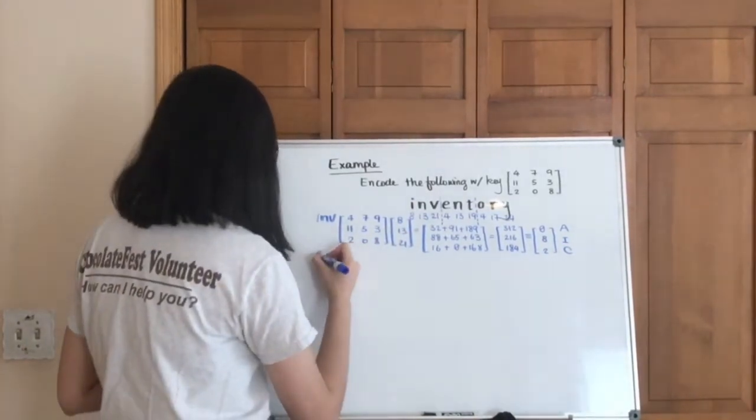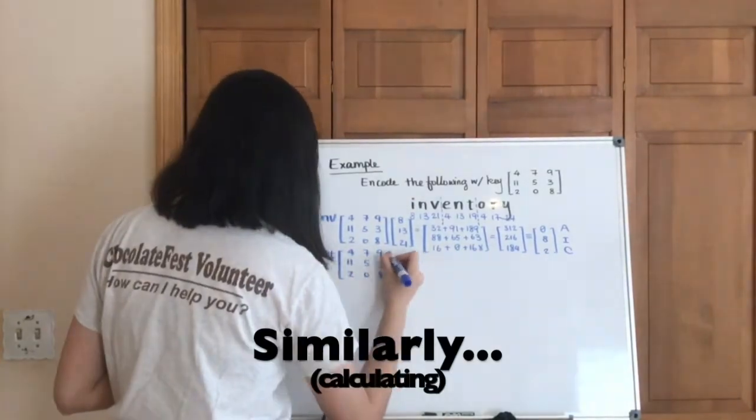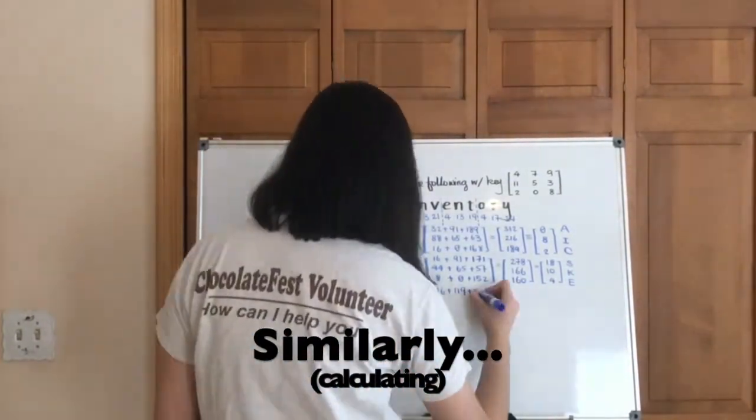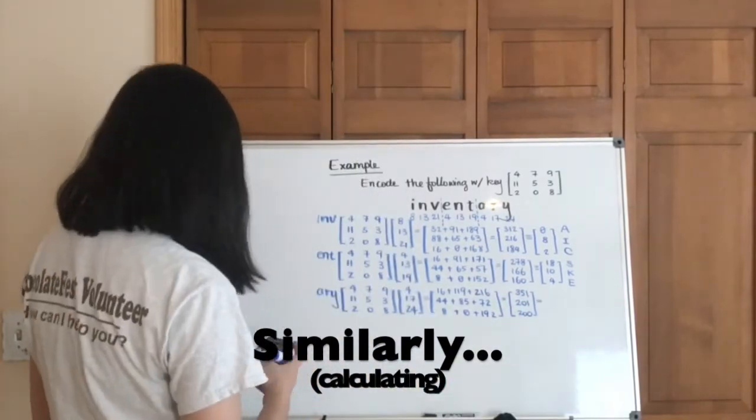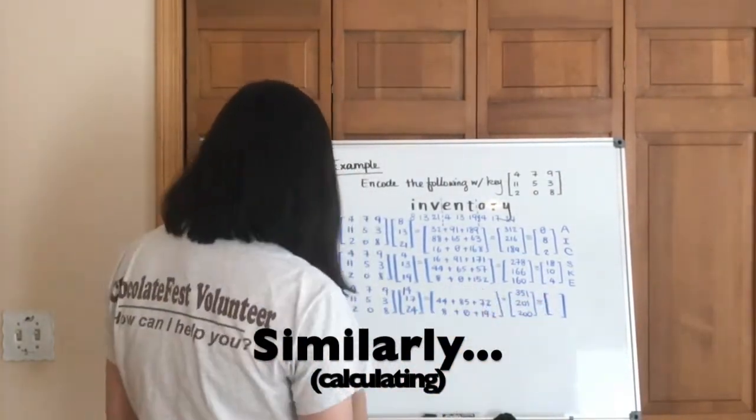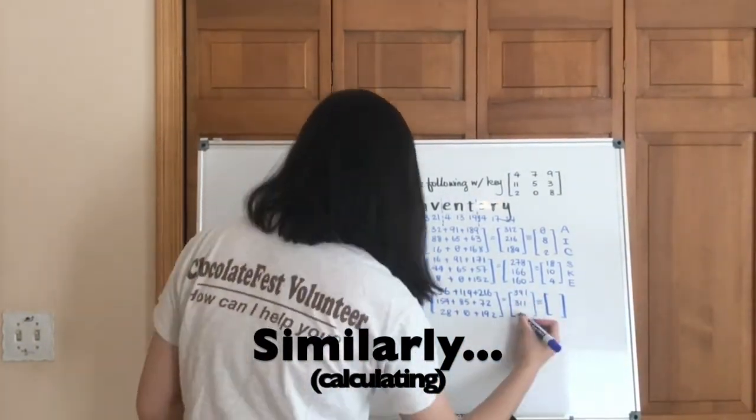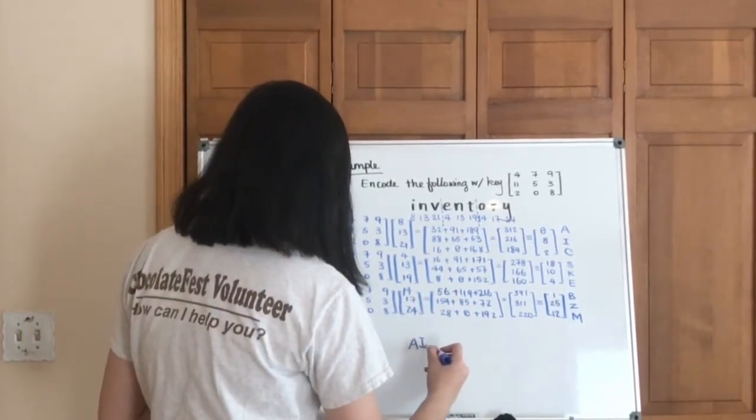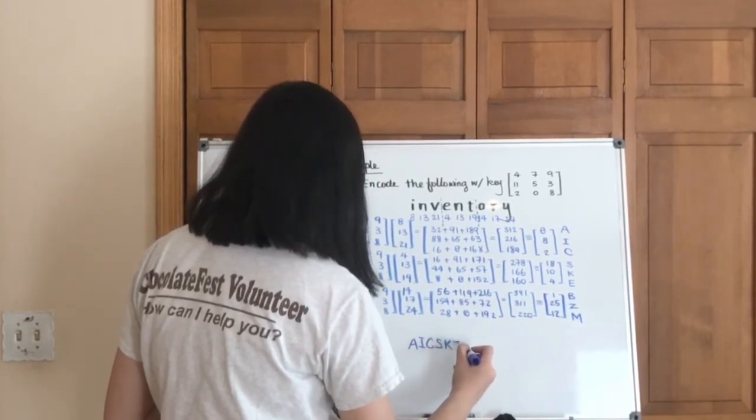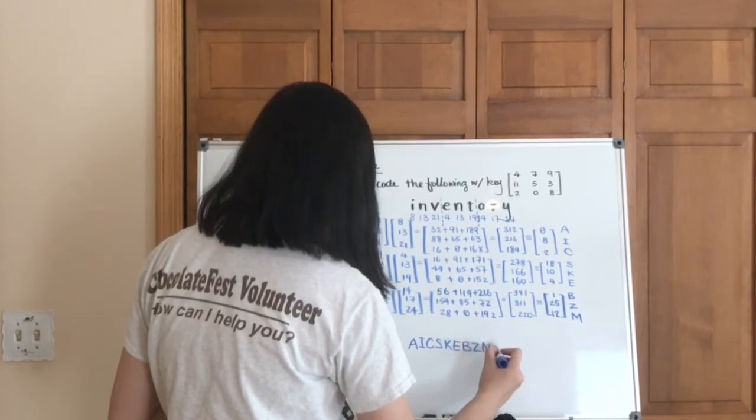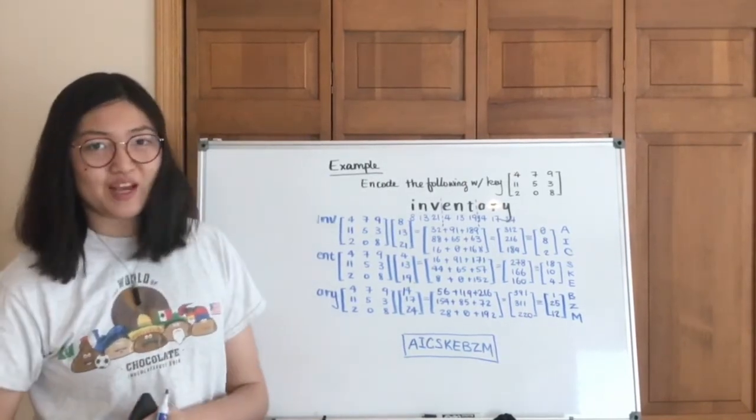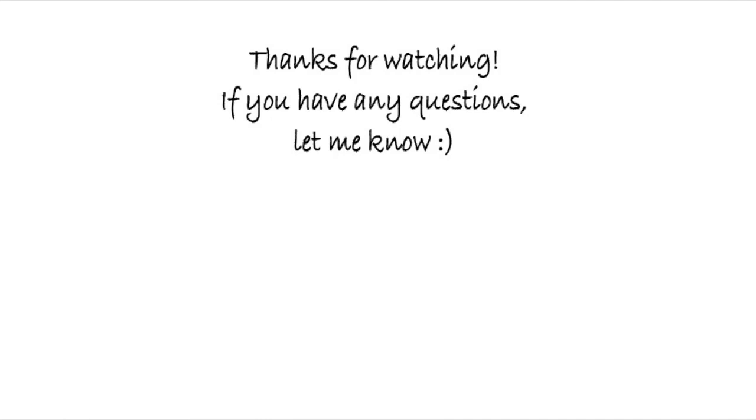And now we move on to the next. We do this whole thing again. And voila! So let's put it into horizontal form. And this is your encoded version of inventory with a 3x3 matrix.